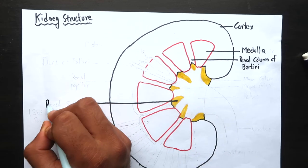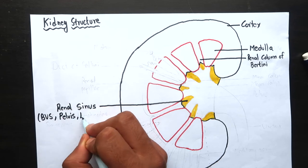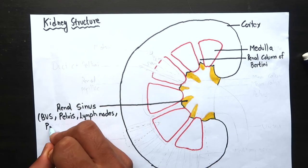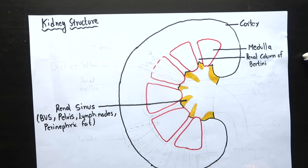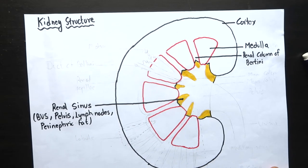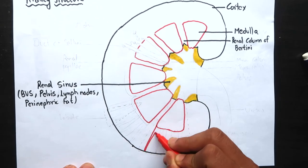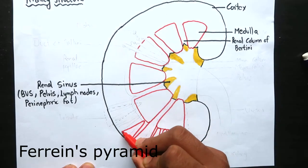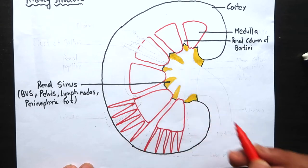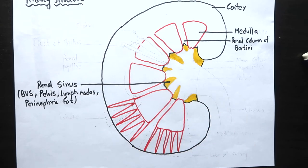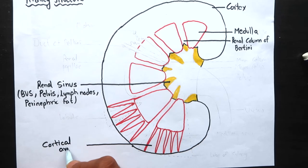Cavity within the kidney is called renal sinus which is occupied by the renal blood vessels, pelvis, lymph nodes and perinephric fat. And there are some ray-like structures coming out of medulla into the cortex. These are called medullary rays or Ferrein pyramid. The area of cortex lying on the base of medulla are called cortical arches.